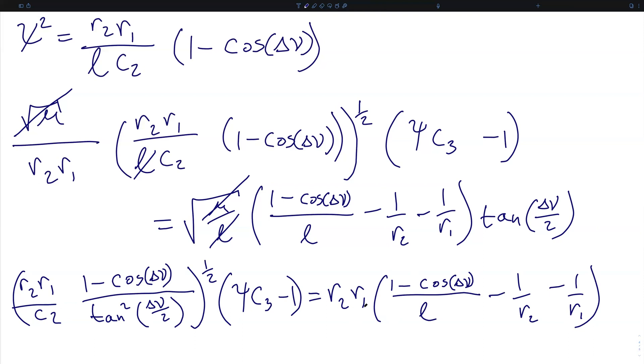This cancels the denominator on this side and gives us a new product on that side. We've also brought the tangent of half of delta nu term down into the denominator of the square root, and therefore it's now tangent squared down here.